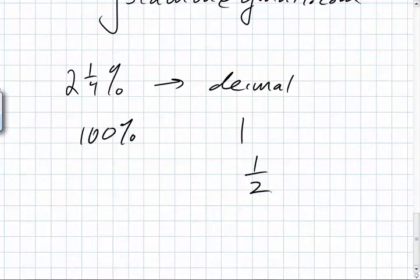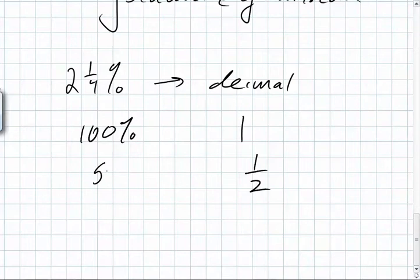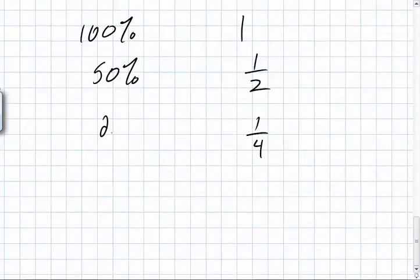So what does one half correlate to? Fifty percent. What does one quarter correlate to? Twenty-five percent. So they're asking, that's twenty-five percent. They're asking, what is two and a quarter percent?